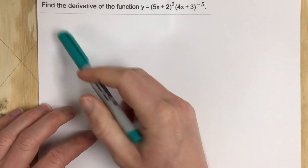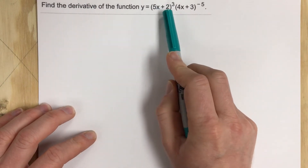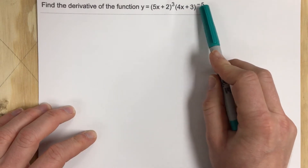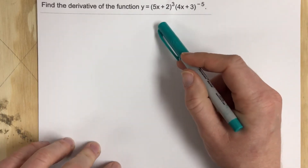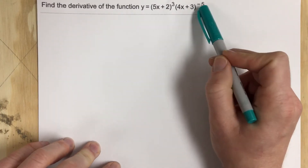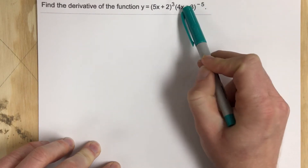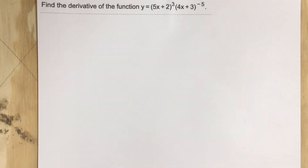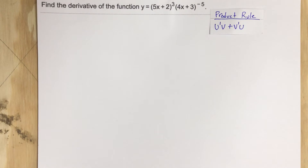This is problem number 5 for section 3.6. This problem says find the derivative of the function y equals 5x plus 2 to the third power times 4x plus 3 to the negative fifth power. We're going to solve this problem by using the product rule combined with the chain rule. You can take the 4x plus 3 to the negative fifth power and move it to the denominator and use the quotient rule if you want, but it's advantageous sometimes to use the product rule combined with the chain rule.